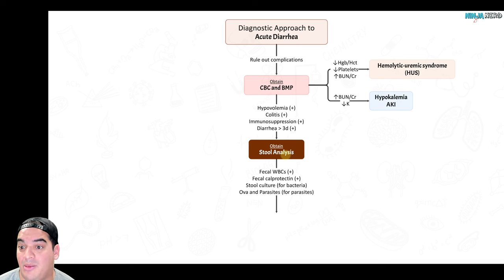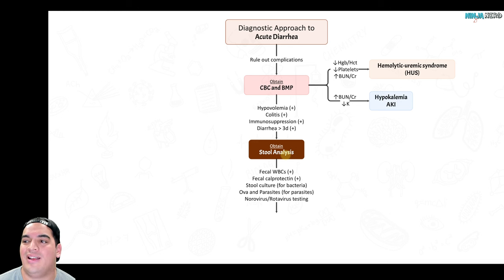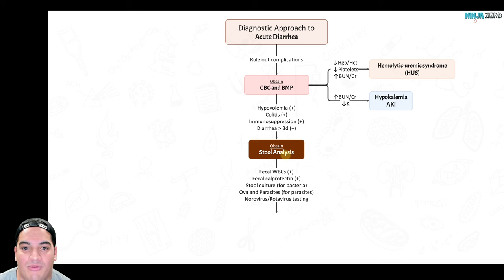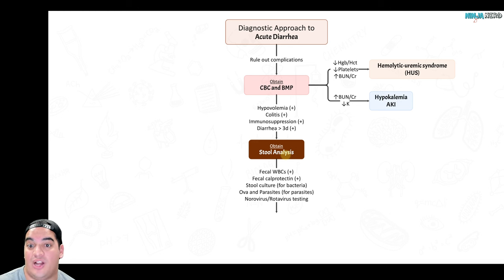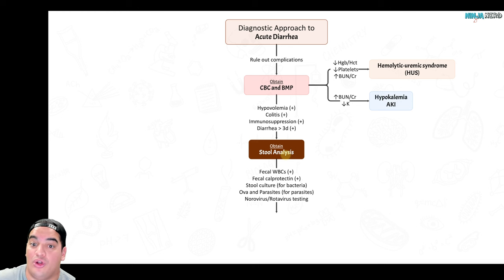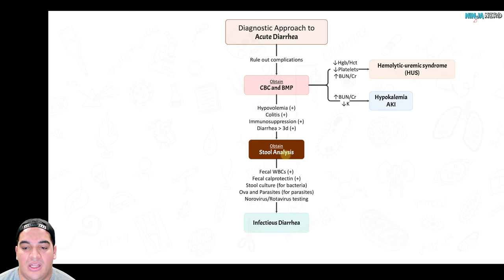Ova and parasites testing identifies Entamoeba histolytica, Cryptosporidium, and Giardia. Norovirus and rotavirus testing helps with isolation guidance — norovirus patients should avoid human contact, and children with rotavirus should stay home from daycare to prevent spread. This testing identifies the infectious type and guides management.